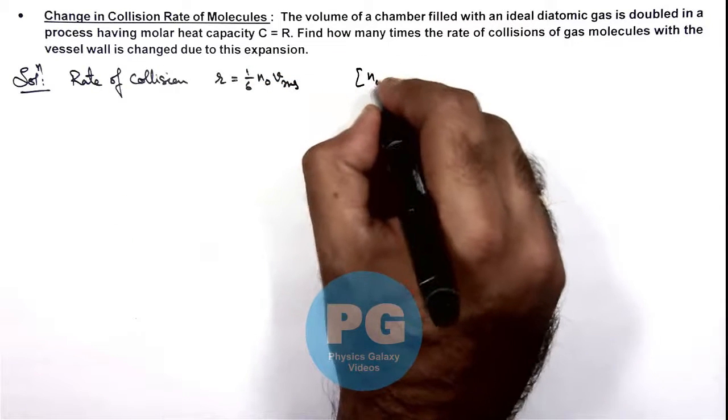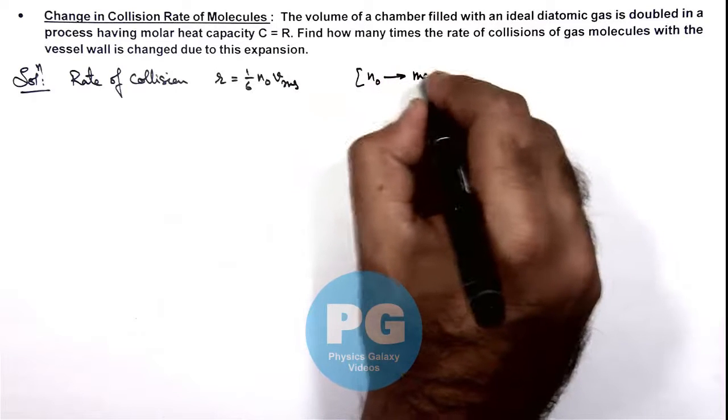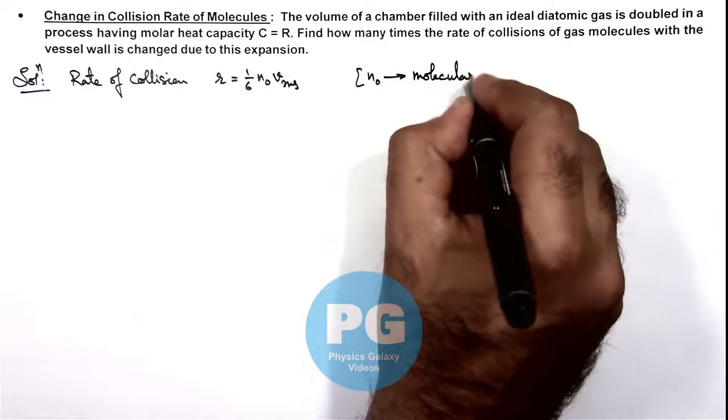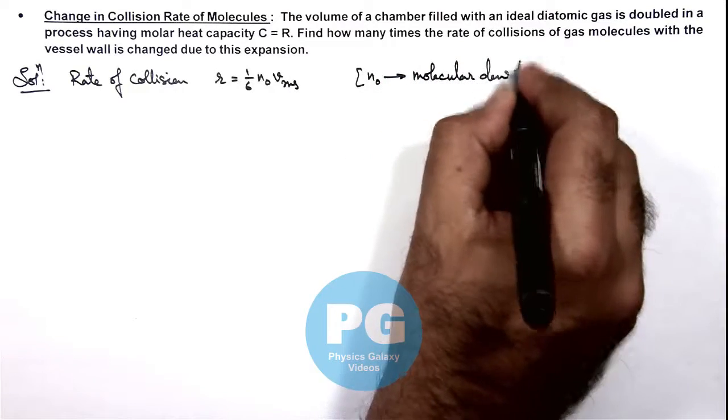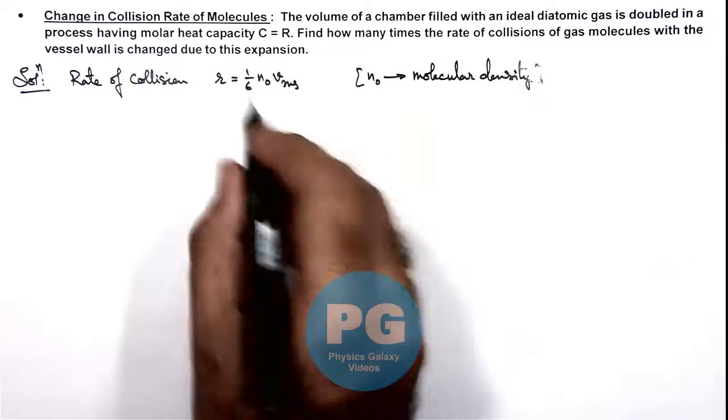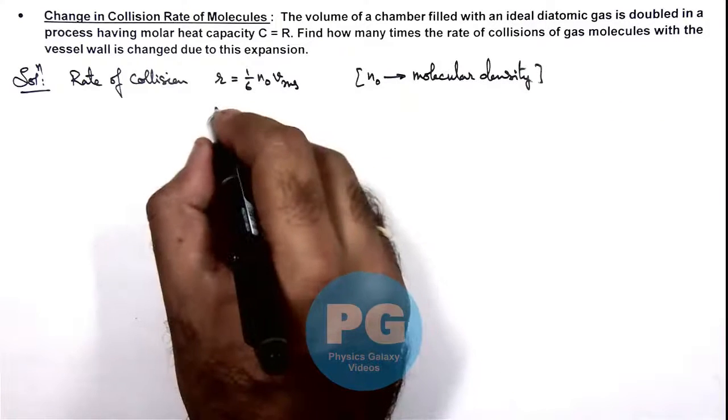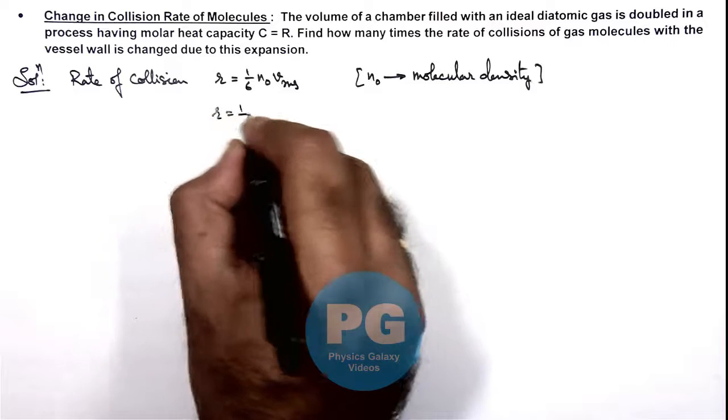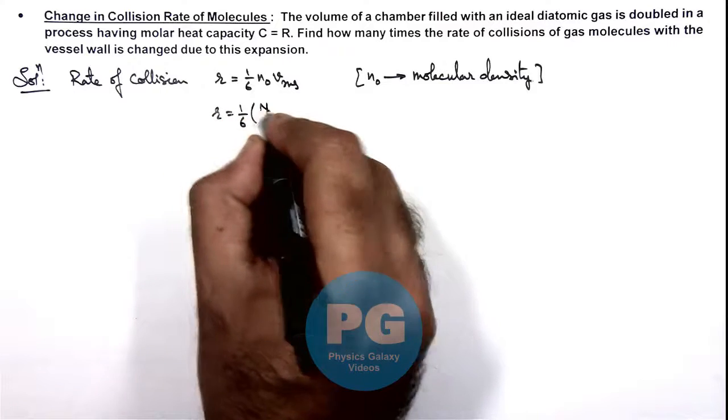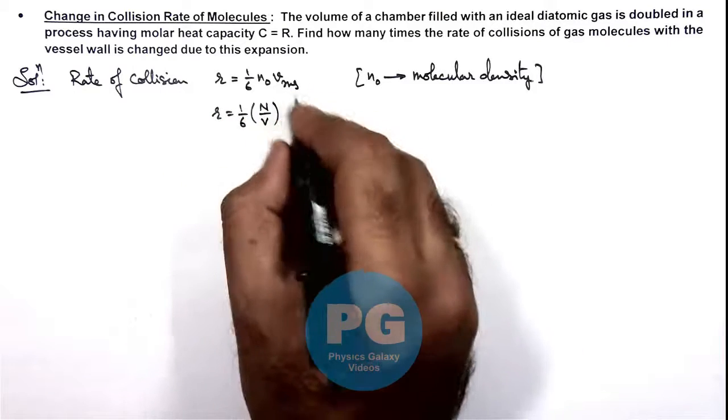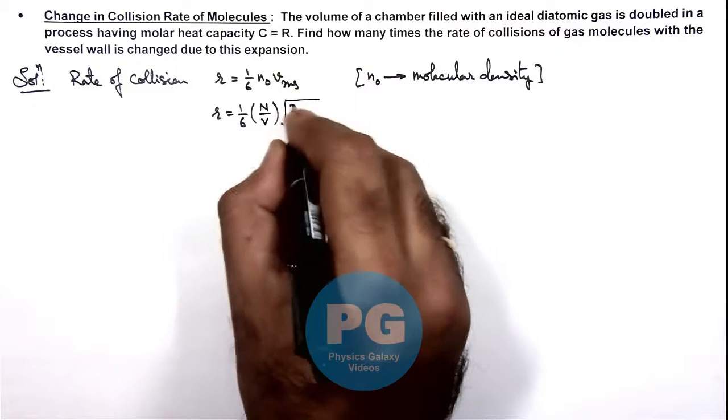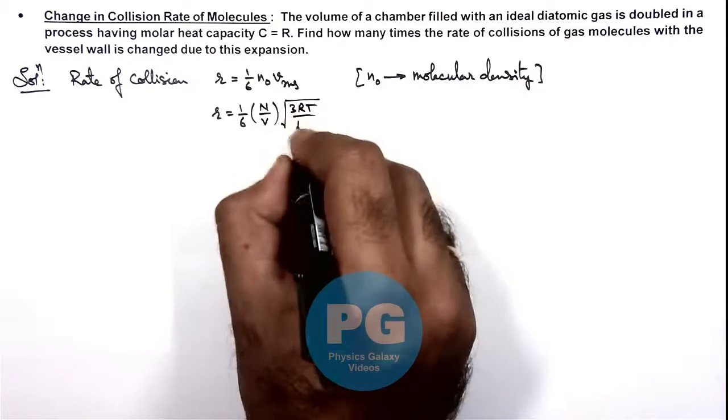Where we know the value of n not is molecular density. And here n not we can write as total molecules by the volume. So here r is 1 by 6 n not we can write as n by v, and v rms is root of 3 r t by m.